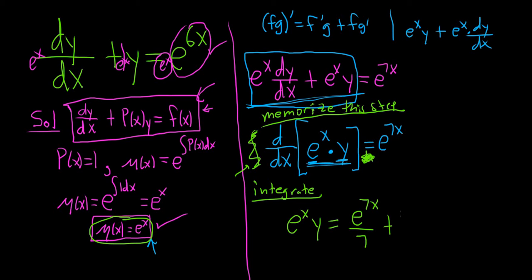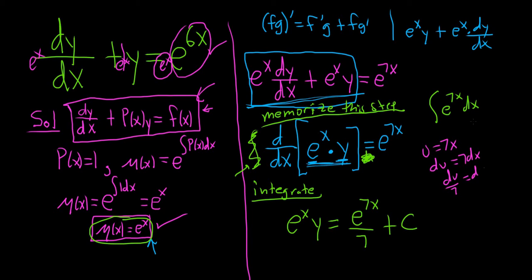Why divide by 7? If you have the integral of e to the 7x dx, you can use u-substitution: let u equal 7x, then du equals 7 dx, so dx equals du/7. The integral becomes (1/7) times the integral of e to the u du, which gives (1/7) e to the 7x plus C. Whenever you have e to a number times x, just divide by that number.